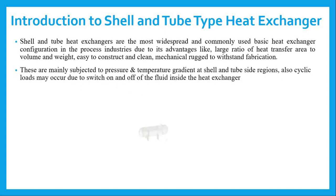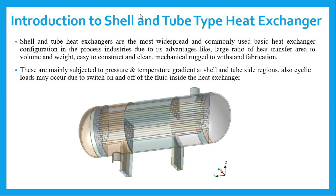This slide gives a small introduction to shell and tube type heat exchangers. As the name suggests, these are the most widely and commonly used basic heat exchanger configurations in the process industry, due to advantages like a large ratio of heat transfer area to volume and weight, easy to construct, clean, and maintain. These are mainly subjected to pressure as well as temperature gradient at the shell and tube side regions, and cyclic loads may occur due to switching on and off of the fluid inside the heat exchanger.